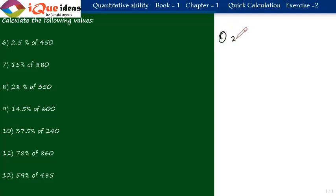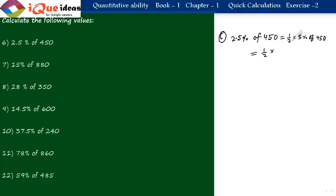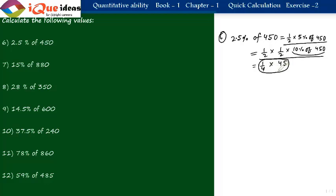Question 6: 2.5 percent of 450. Since 2.5 is half of 5, and 5 is half of 10, then 2.5 is one-fourth of 10. So it is one-fourth into 10 percent of 450. 10 percent of 450 is 45. Then one-fourth of 45 equals 45 divided by 4, which is 11.25. That is the final answer.